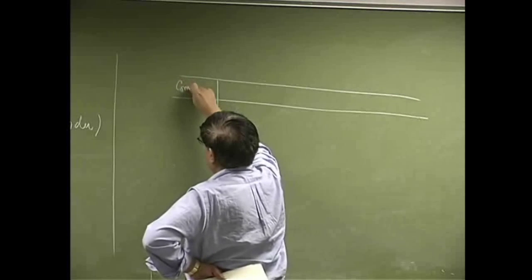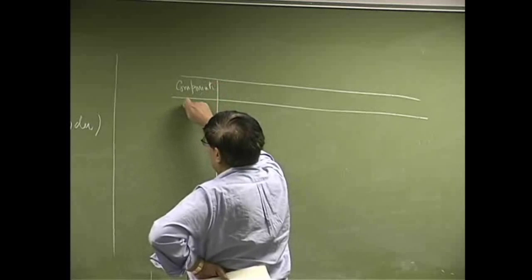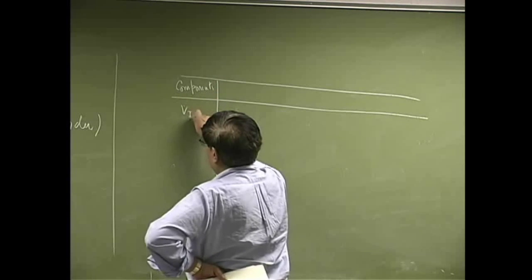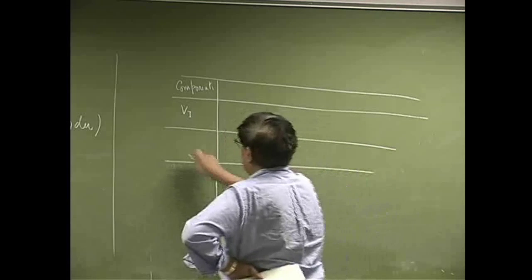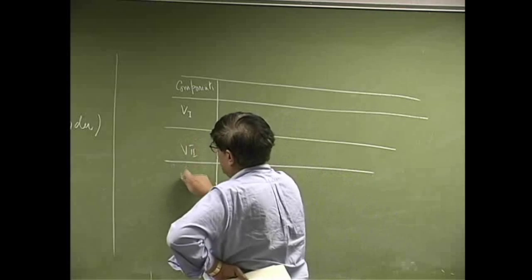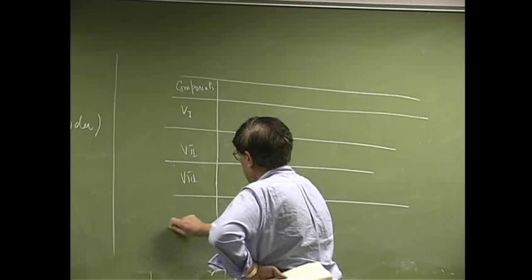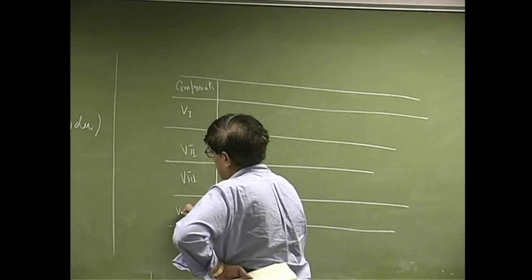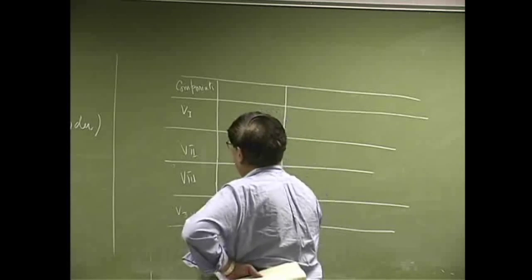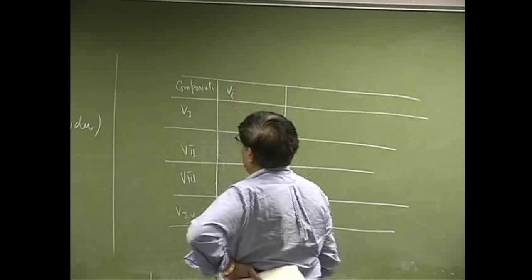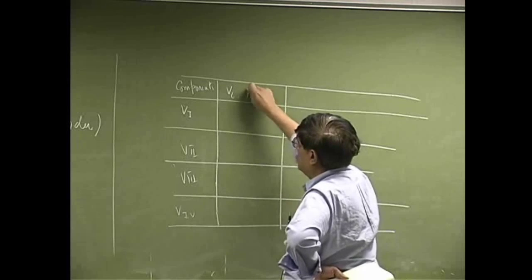The first column lists the components: Volume 1, Volume 2, Volume 3, and Volume 4. The next column gives the volume of each sub-component in cubic inches.